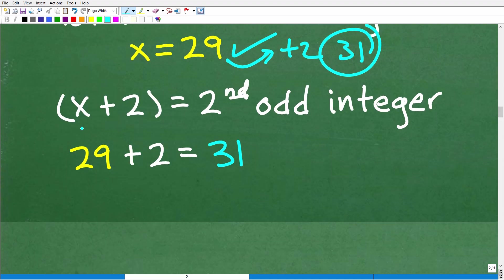And of course, we formalize that right here. So X plus two is our second odd integer. Our first integer is 29, so it's 29 plus two. That is 31.